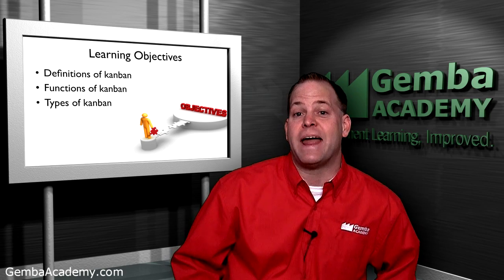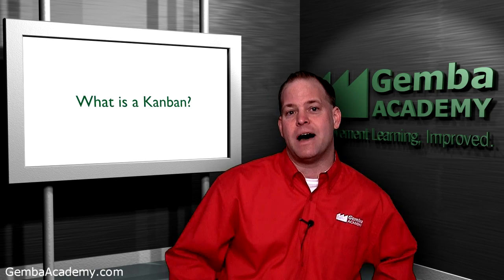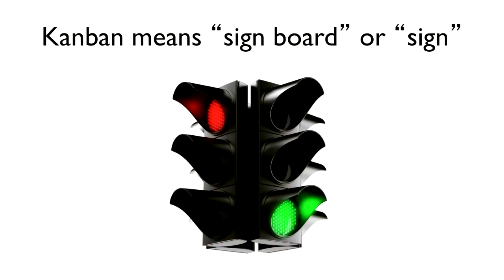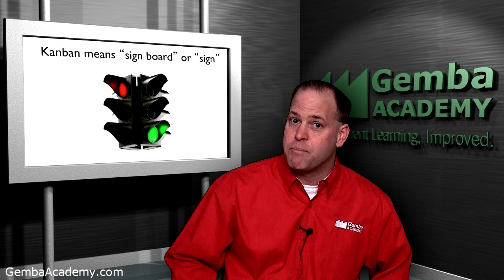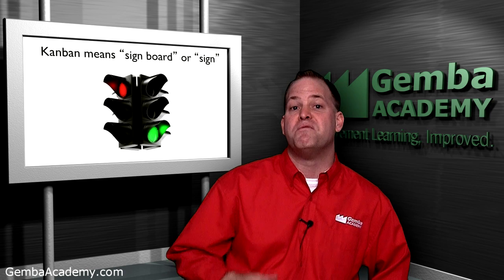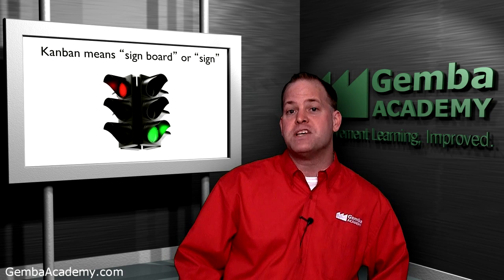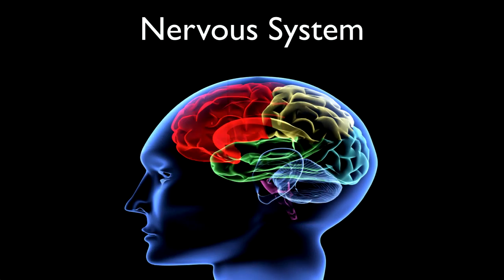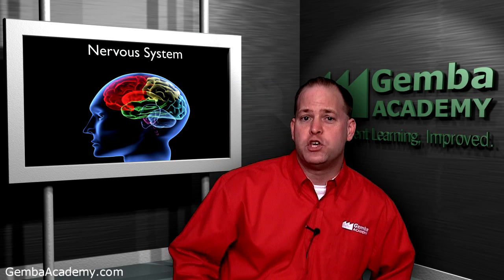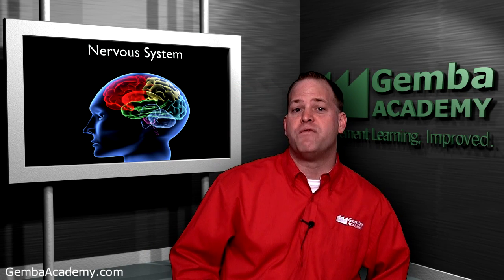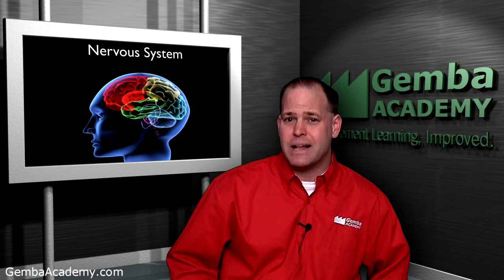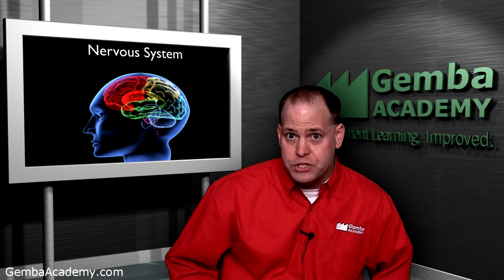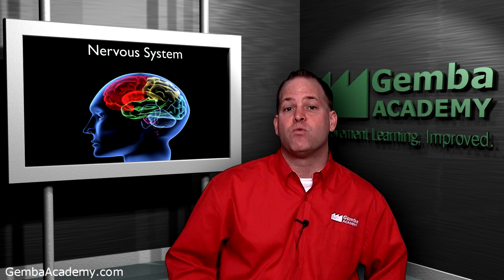Let's get things started by answering the question: what is a Kanban? Kanban is a Japanese word that literally means signboard or sign. In the context of production control, Kanban refers to the visual signals that authorize the production or movement of items. Kanban are sometimes referred to as the nervous system of a lean production system. Just like our human brains send instructions to our various body parts, a Kanban system gives production control instructions to each and every work area.